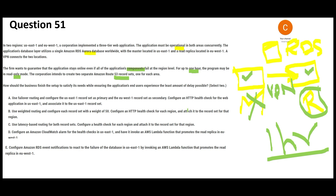When the question says components can fail, we know either this region or the other can fail — these are the two components being discussed. We have to provide a solution, and a key requirement here is no delay or very minimum delay.